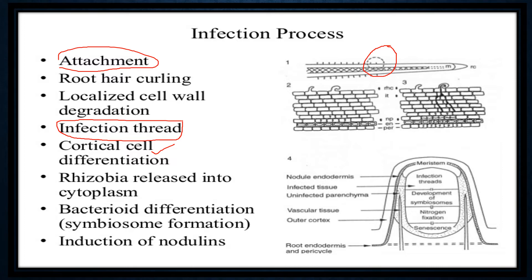Bacteroid differentiation follows. The meristem gets infected, the infection thread moves, and then development of the symbiotic relationship ultimately gives us nitrogen fixation. This does not affect the vascular nature of the plant — only the corticular regions are infected — and finally nodule formation occurs.